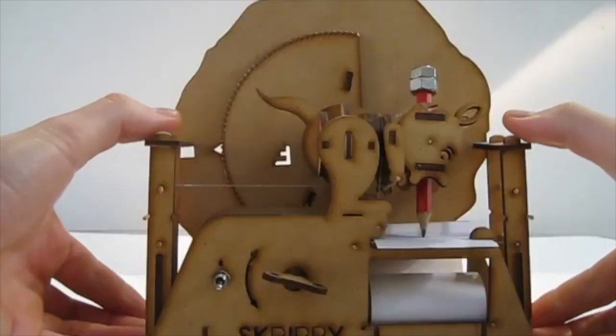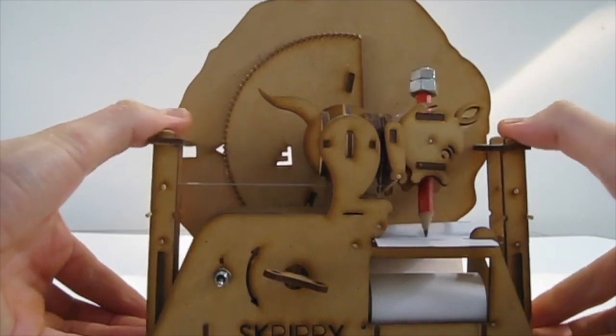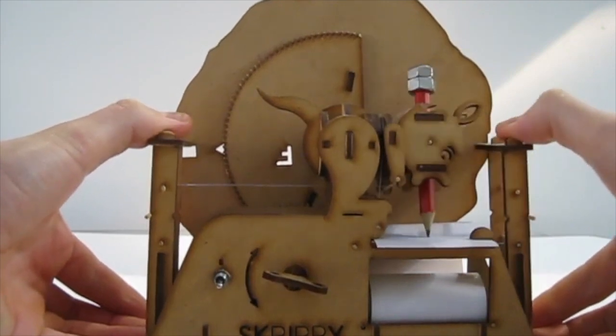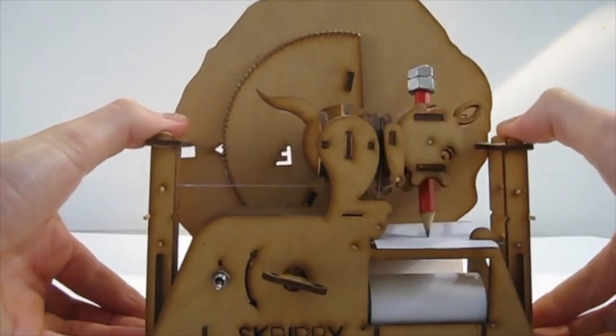These strings are then tied to levers, so that when we pull the levers, we can either nod or shake Skrippy's head, and move the tip of the pencil in the X or Y positions.